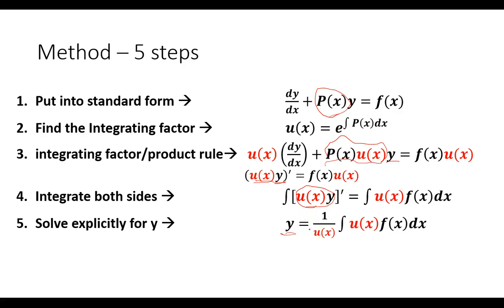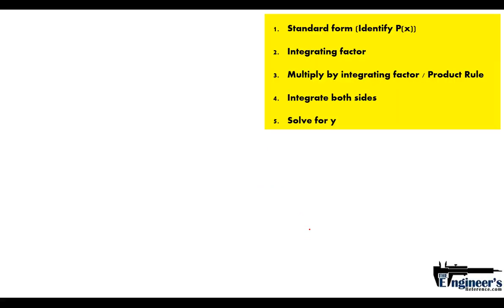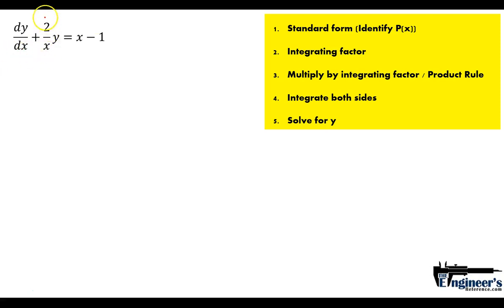Now let's look at the actual problem and work through it using those five steps. The problem is: dy/dx plus 2/x times y equals x minus 1. This is already in standard form — we have dy/dx, we have p(x) times y equal to a function of x. So we can identify p(x) as 2/x. Step one is done.